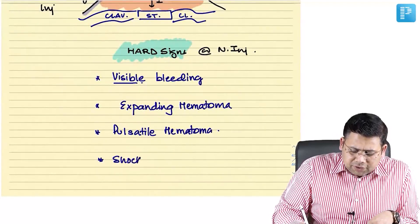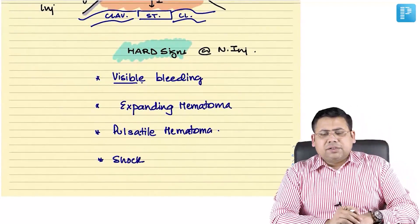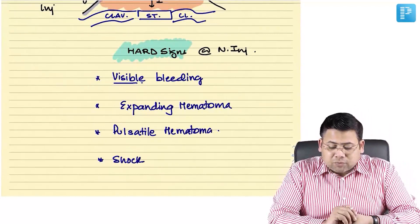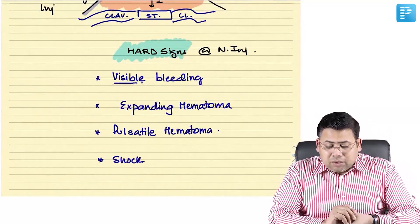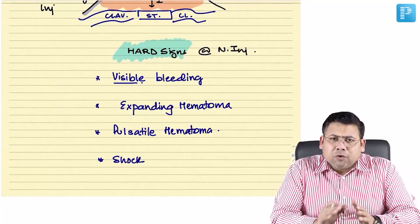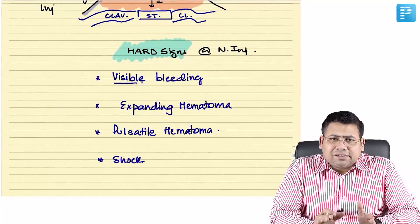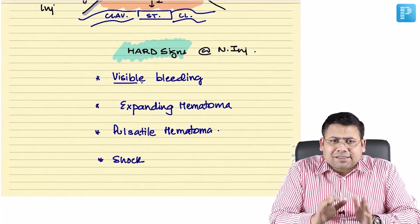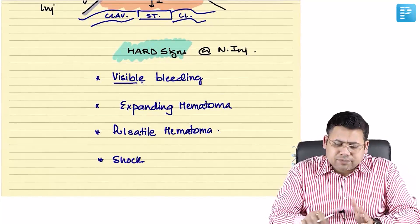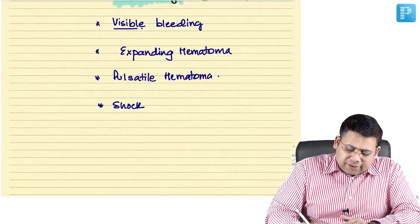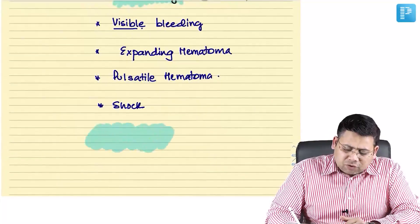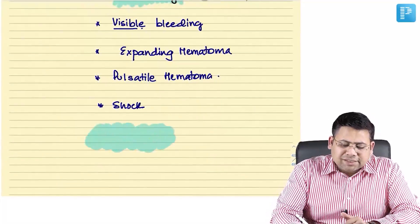Additionally, patient in shock with a neck injury is a hard sign. So expanding hematoma, pulsatile hematoma, visible bleeding, and shock are all hard signs — direct signs indicating vascular injury.